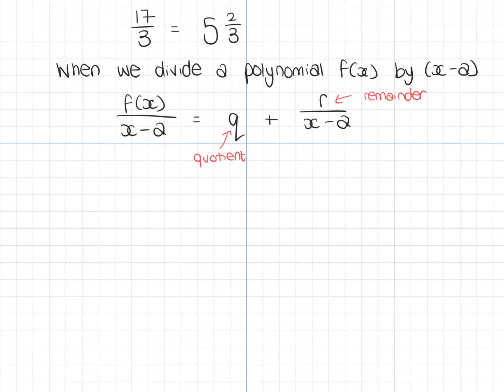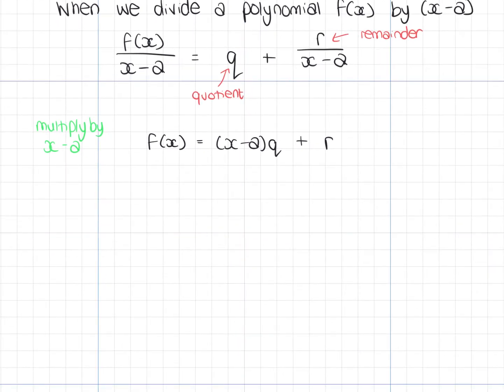And we're going to use this to prove the remainder theorem. So, if I look at this expression, I multiply both sides, or I multiply everything by x minus a. So if I multiply everything by x minus a, the left-hand side is just going to be f(x). I'm going to have x minus a times q plus, and that one's just going to be r.